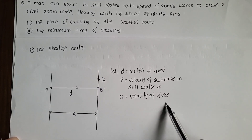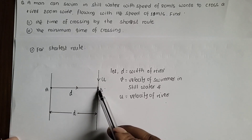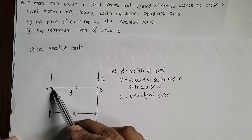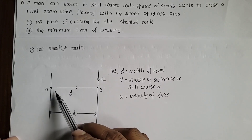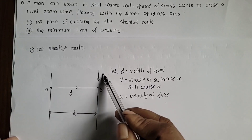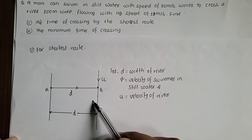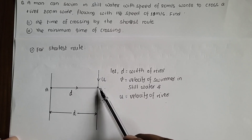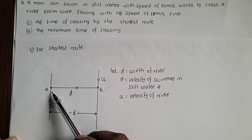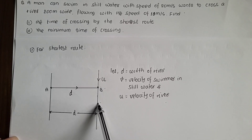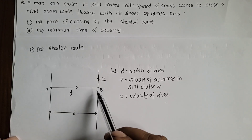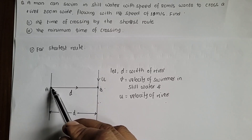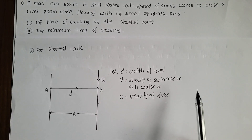If the river is flowing, the swimmer cannot simply swim straight from A toward B — the river's flow pushes downstream. So the swimmer must angle upstream against the river's flow direction. By swimming at a certain angle upstream, the river's current and the swimmer's velocity combine so the resultant carries the swimmer straight across to point B.